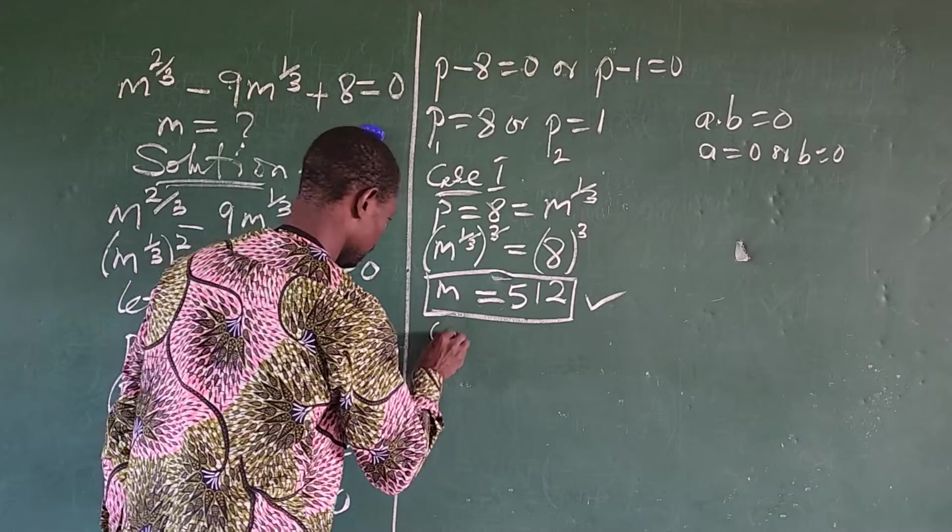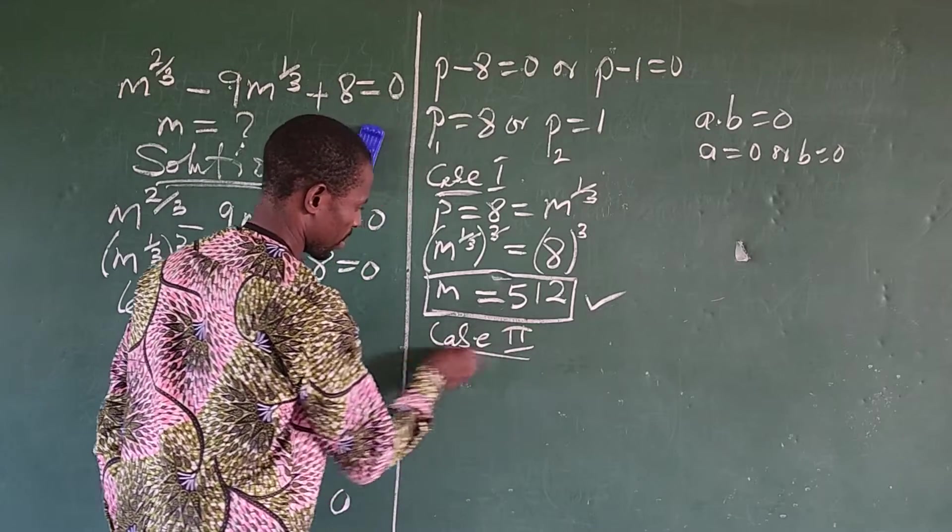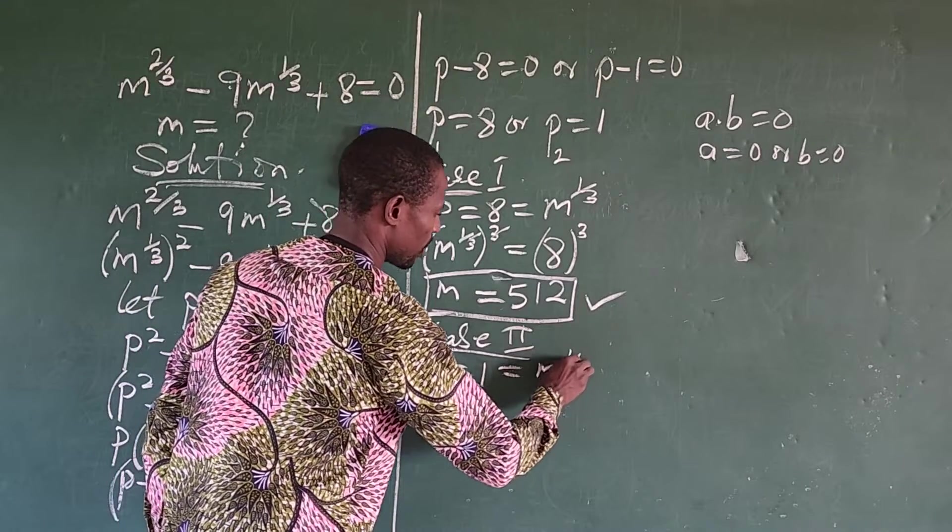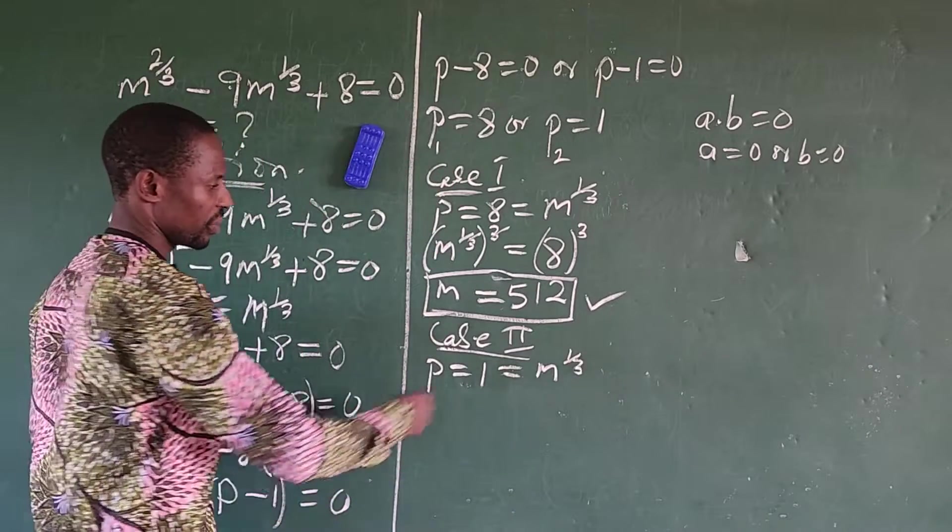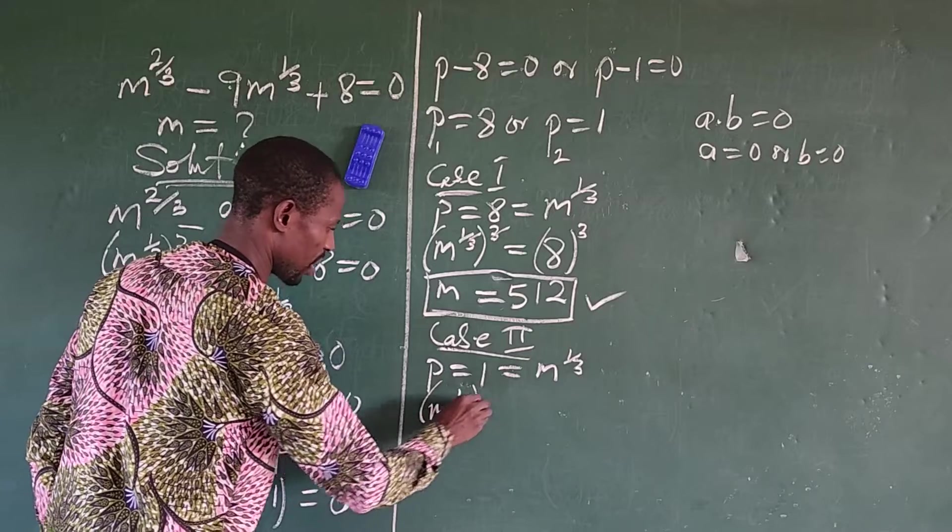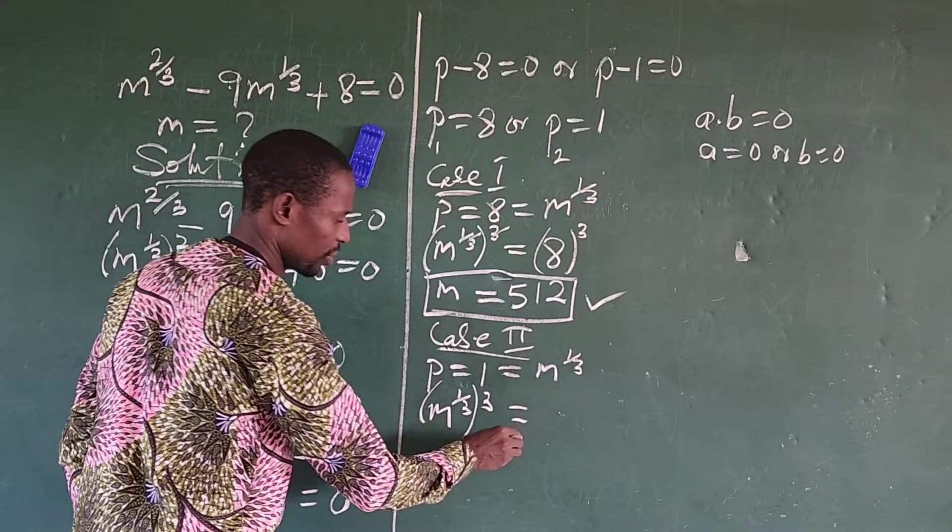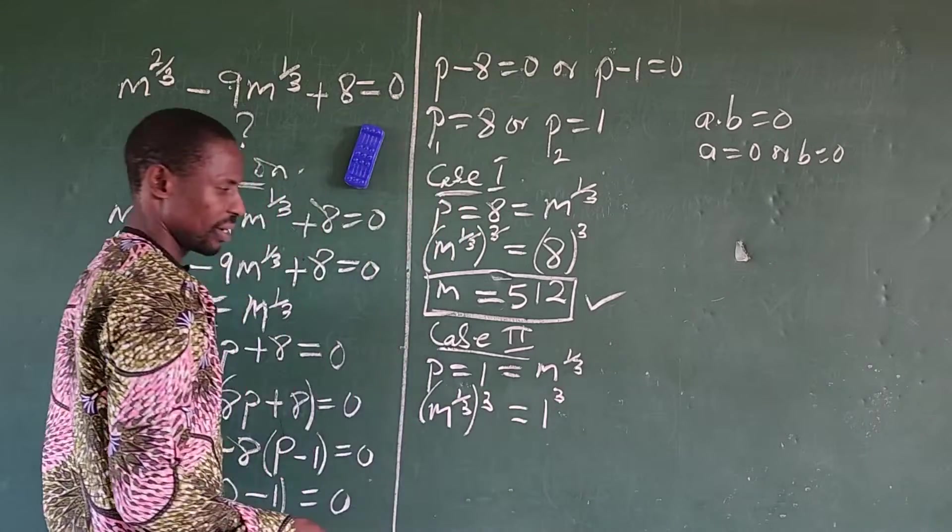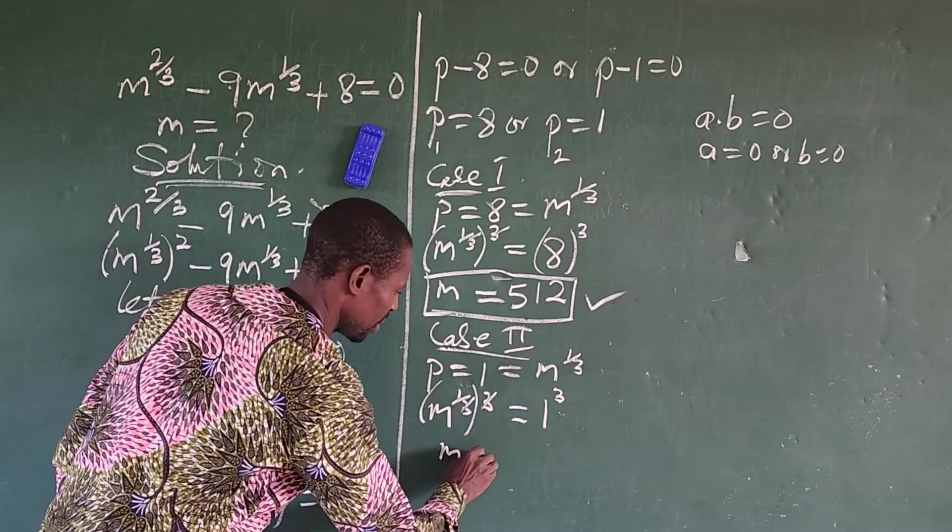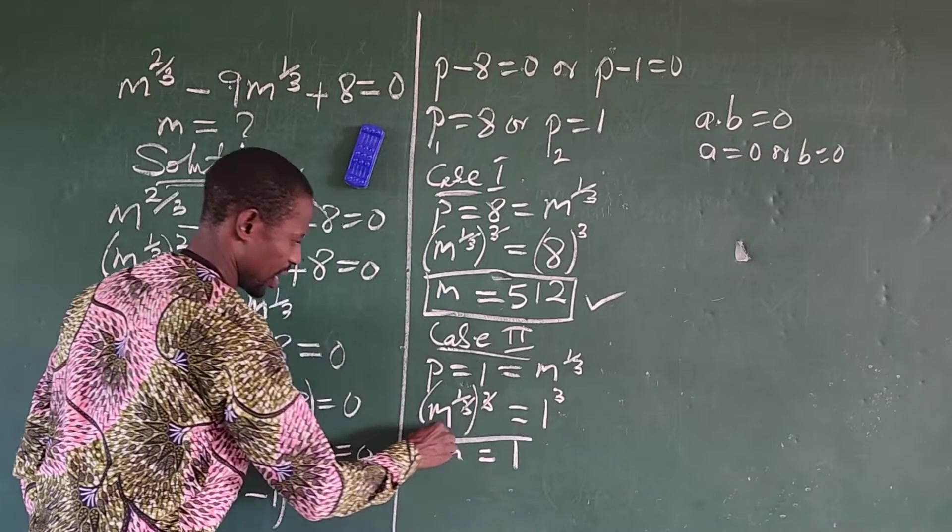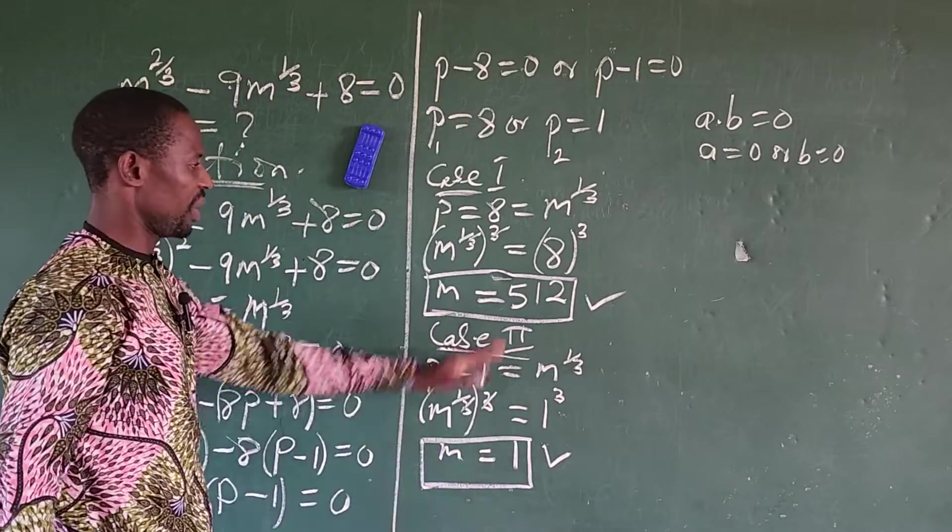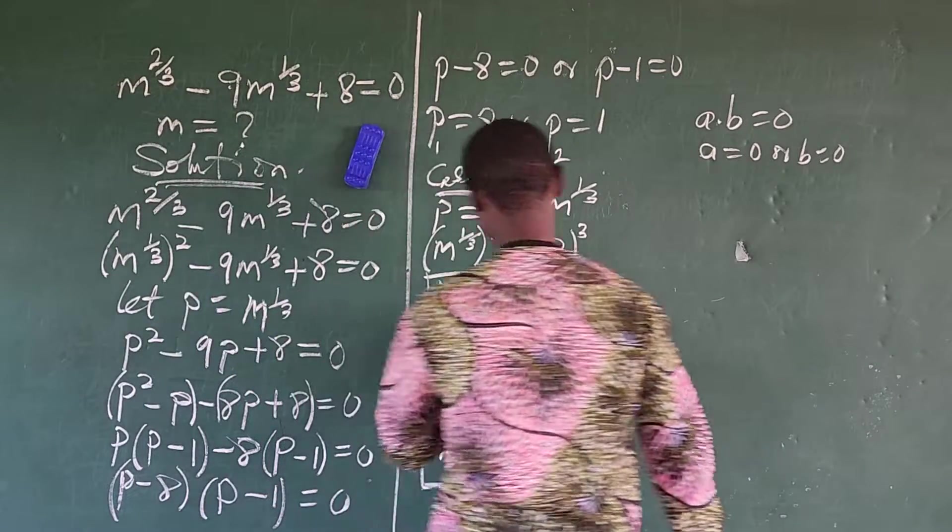Now case 2, we have our p equal to 1, which is equal to m to the power of 1 over 3. Again, we take the cube of both sides. So we now have m to the power of 1 over 3 all to the power of 3 equals 1 to the power of 3. Of course, 1 to the power of 3 will give us 1. So this leaves, so we now have m equals 1. So we have our m to be 1 and 512.